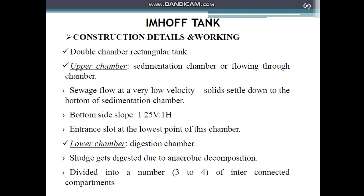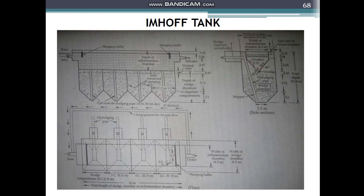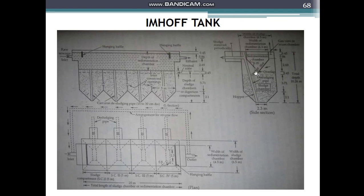The typical details of an Imhoff tank show it is a double-chamber rectangular tank. The upper chamber is called the sedimentation chamber or flow-through chamber, through which the sewage flows at a very low velocity. The lower chamber is called the digestion chamber, in which sludge is digested by anaerobic decomposition. Solids in the slowly moving sewage settle at the bottom of the sedimentation chamber through its sloping bottom sides, with a slope of 1.25 vertical to 1 horizontal, allowing sludge particles to settle properly and slide down into the digestion chamber through an entrance slot at the lowest point.